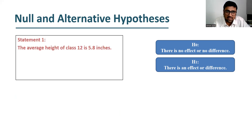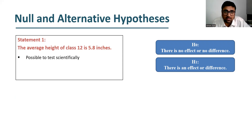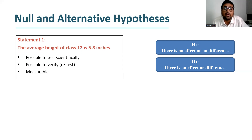Let's take a real-life example. Suppose we are interested to know the average height of class 12 students. The statement says that the average height of class 12 students is 5.8 inches. Here it is possible to test scientifically — the answer is yes. Can you re-verify or re-test this? The answer is again yes. Is it measurable? Yes. So if you have these three qualities, you can convert the statement into null hypothesis. Not all statements can be converted into null hypothesis.